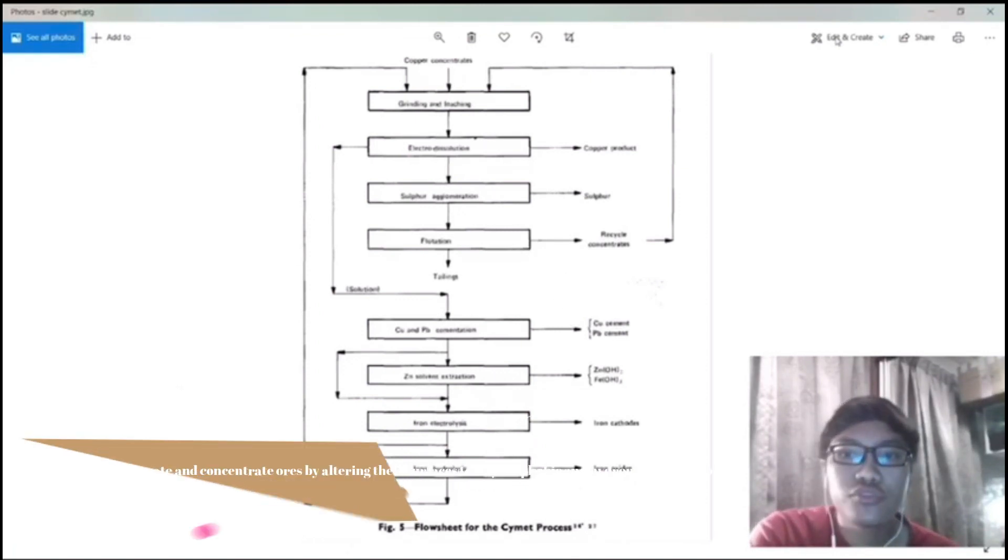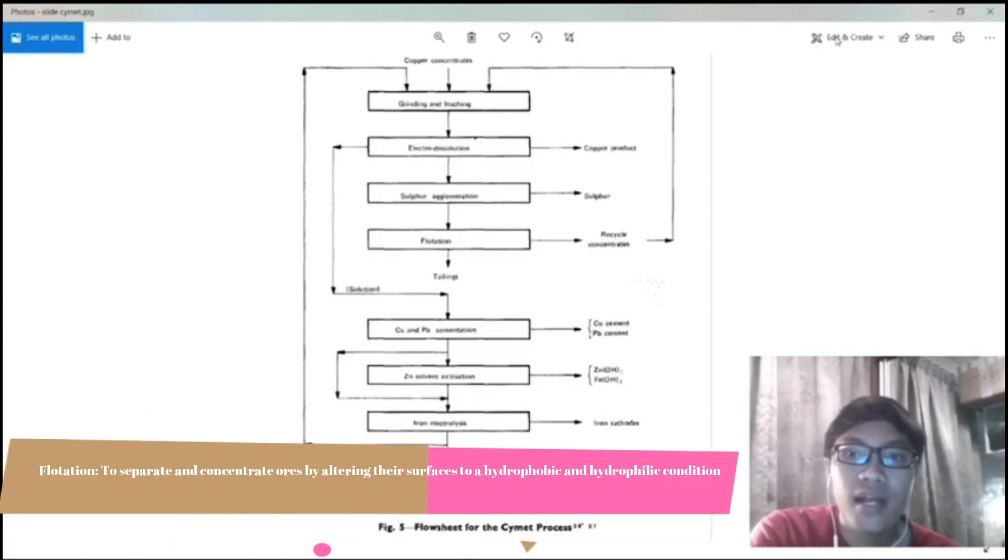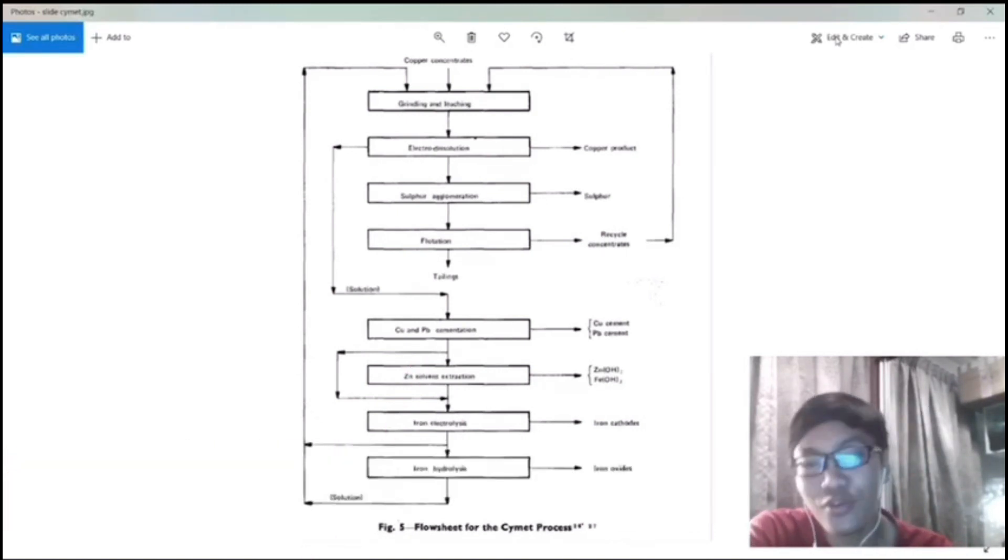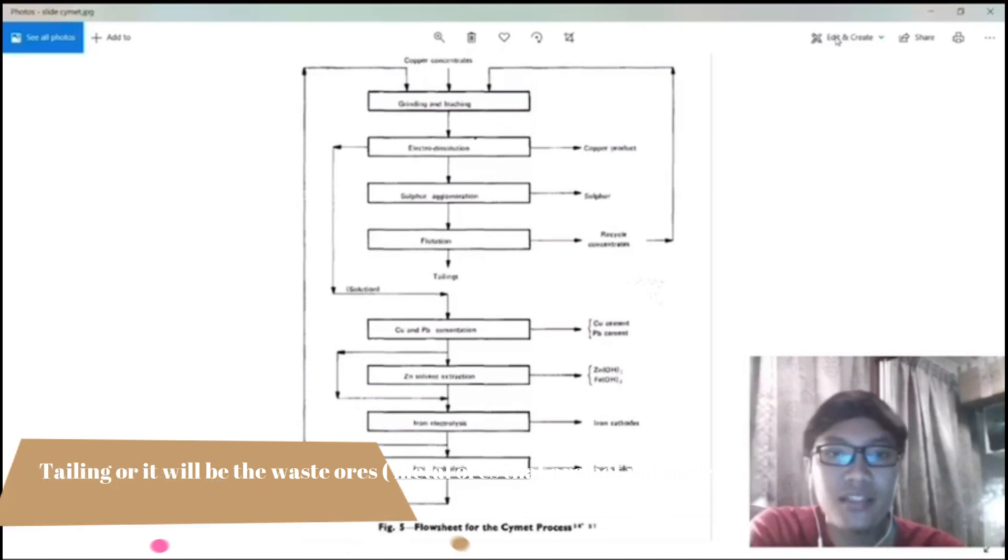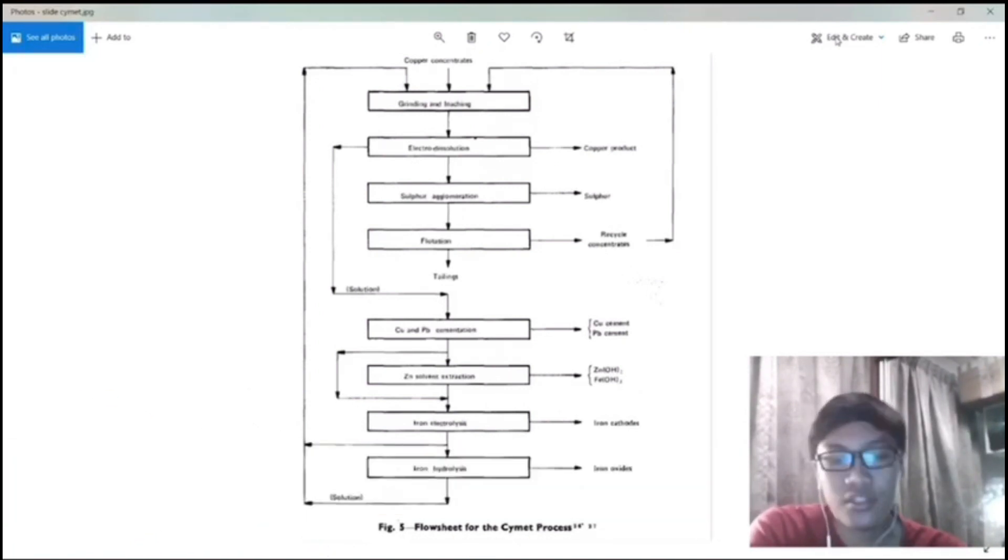Flotation is a method used to separate and concentrate ores by altering their surface to a hydrophobic or hydrophilic condition. The concentrates will be recycled back to the first process, which is grinding and leaching, and the others will be our tailing, which will be waste. That's all for flow sheet for the Cymbal process.